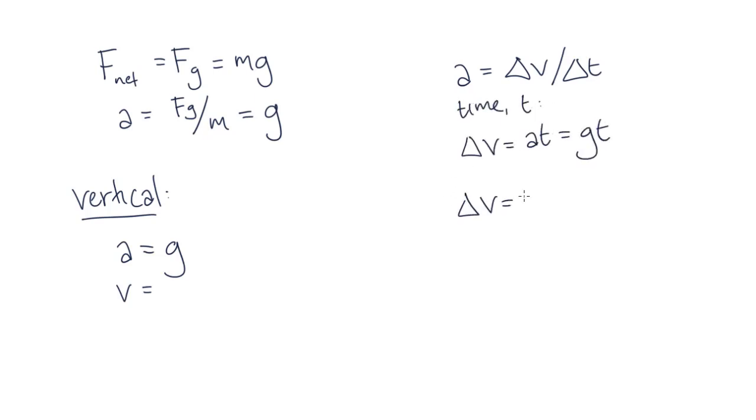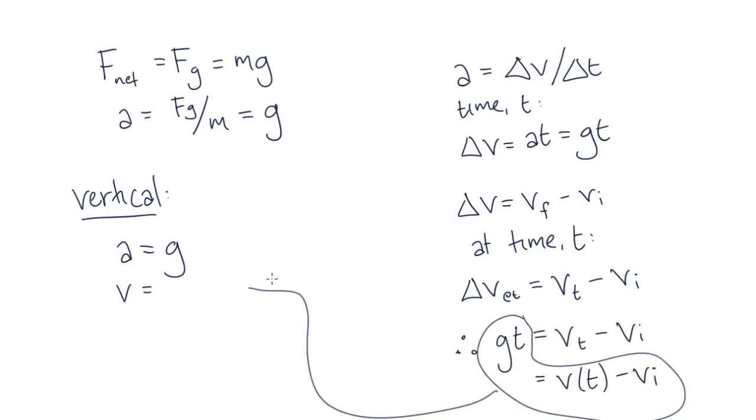We also know that our change in velocity is equal to our final velocity minus our initial velocity. We can arbitrarily choose our final time to measure, so we can see that at any moment in time, our change in velocity is equal to the velocity at that specific time minus our initial velocity. Rearranging our equations, we can find that our velocity at time t is equal to gt plus initial velocity.